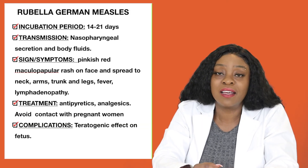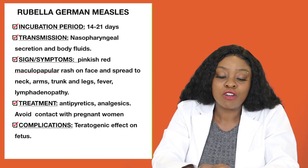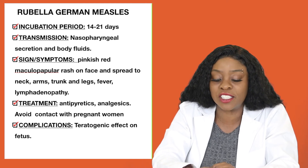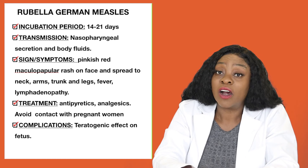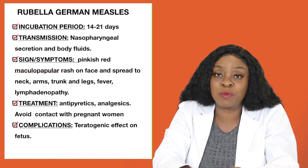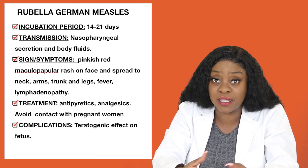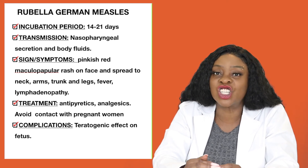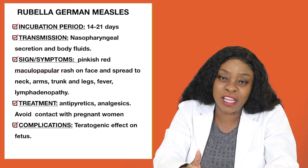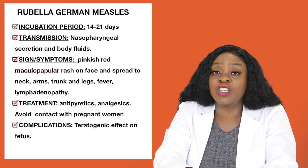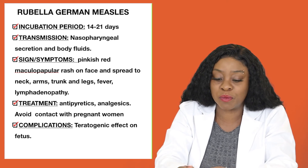Another common pediatric communicable disease is rubella, otherwise called German measles. Rubella transmits via virus and has an incubation period of 14 to 21 days. Transmission-based precautions for rubella include droplet precautions, because it is spread via nasopharyngeal secretions and body fluids. Remember that rubella, or German measles, can transmit from a pregnant woman to her baby, so we have to be very careful about children who have rubella coming into contact with pregnant women.